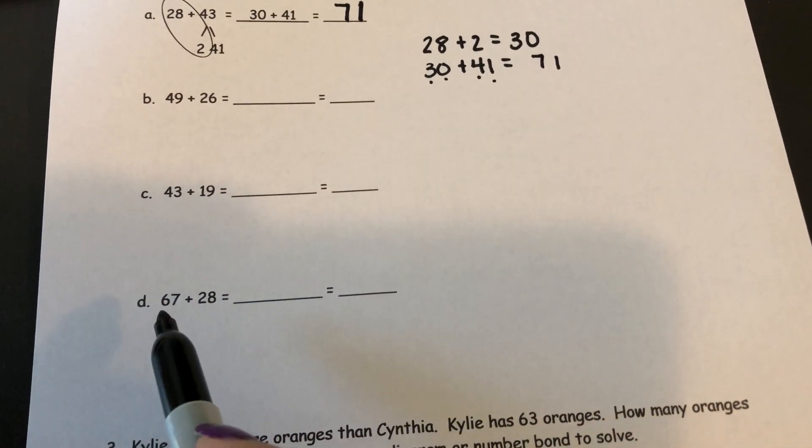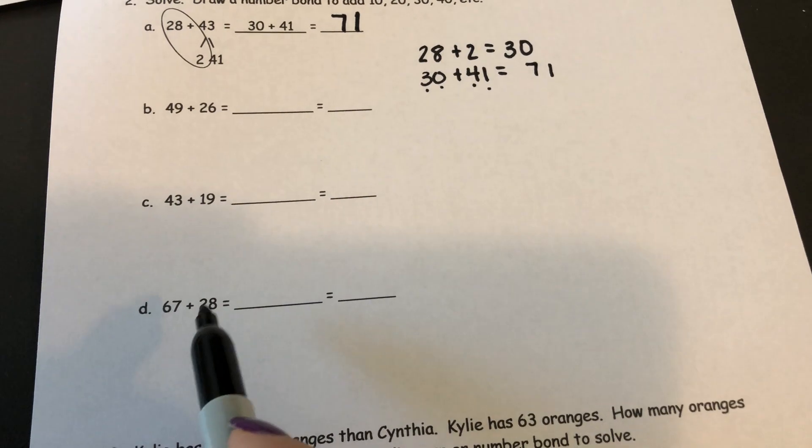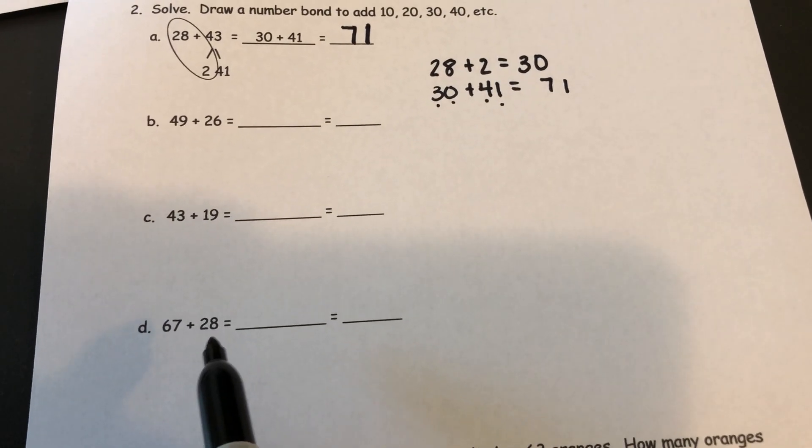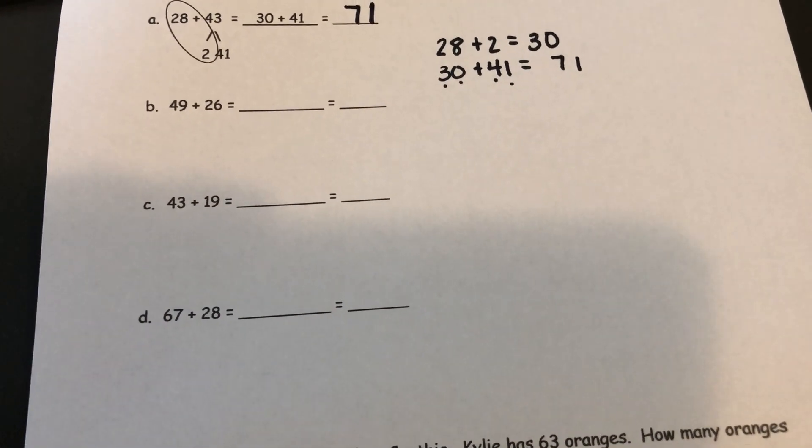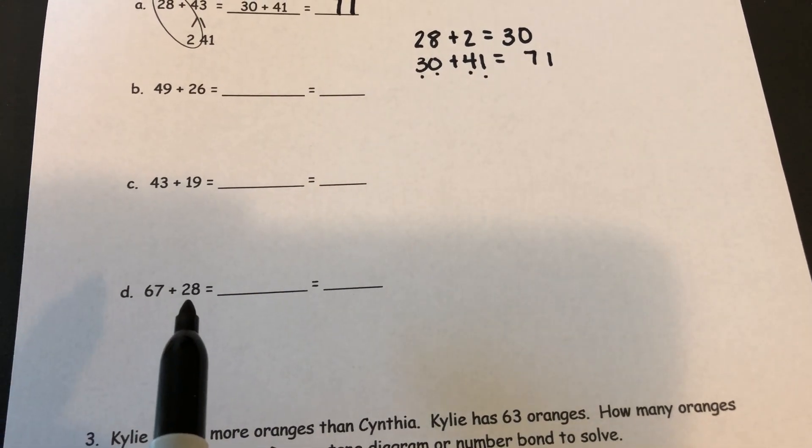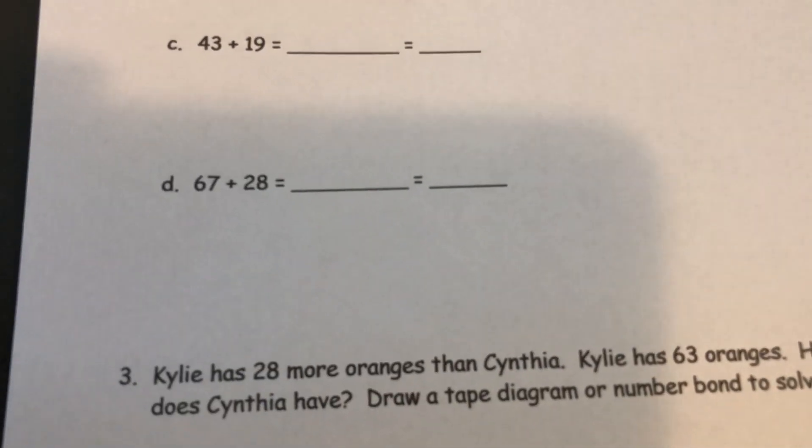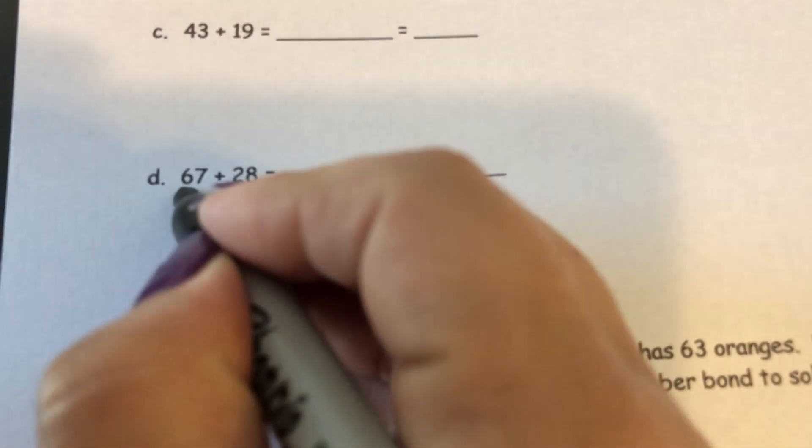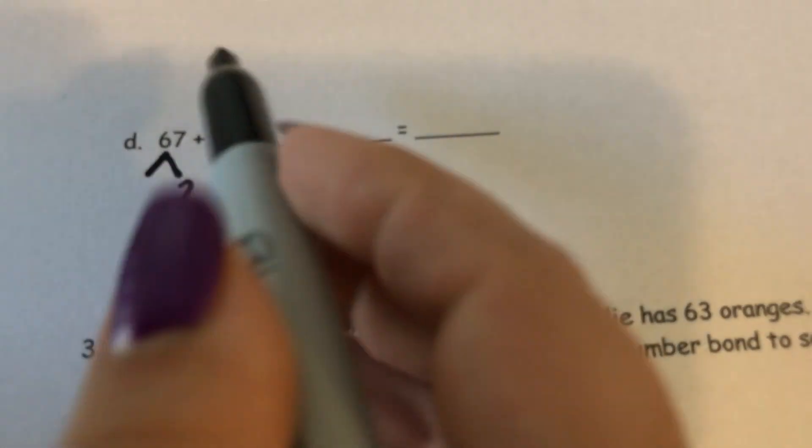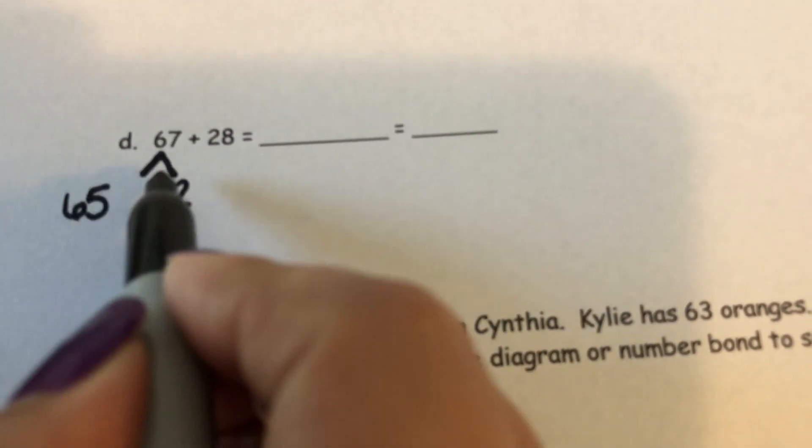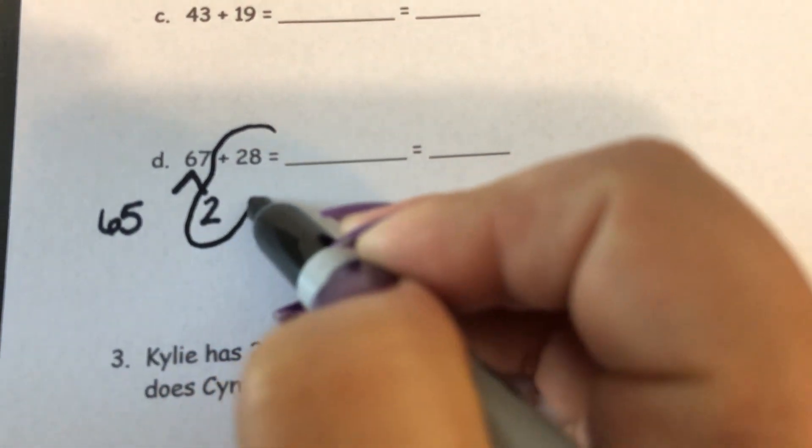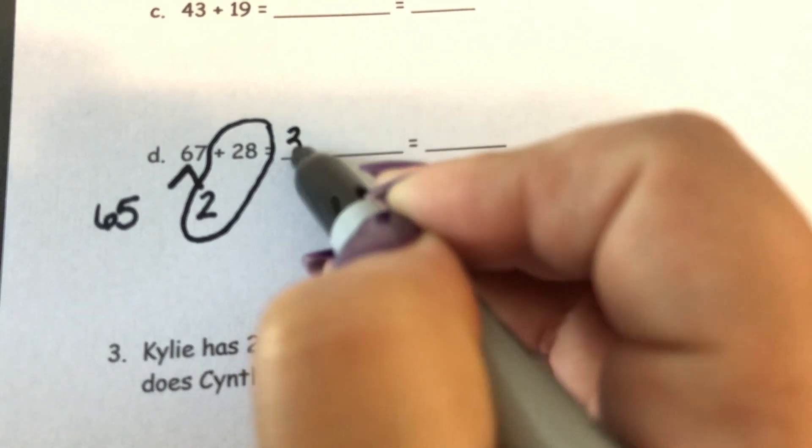So if I'm adding 67 and a 28, I'm going to look at this 28 because it's closer to the multiple of 10. I know that 28 is fairly close to 30. So I would need two more to turn 28 into a 30. And I'll get those two more from the 67. So I'm going to decompose 67. I'll take two out, and that will leave me with 65 left in the 67. And I know that 28 plus 2 gives me 30.